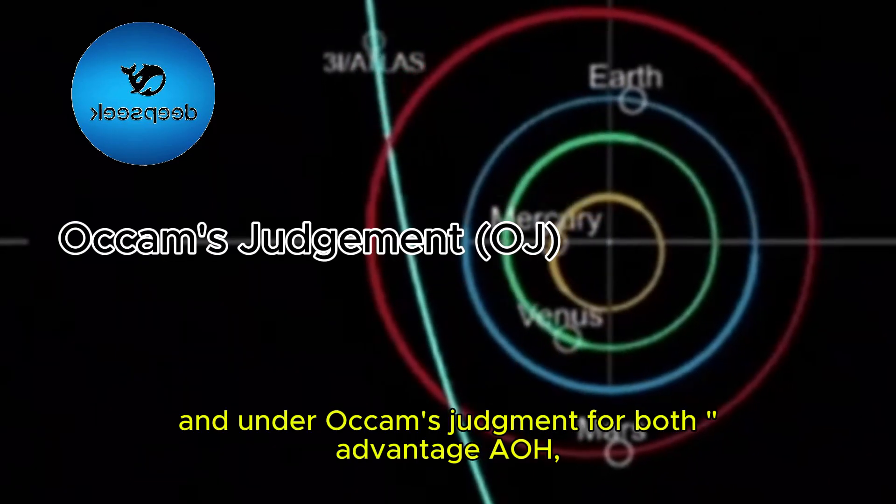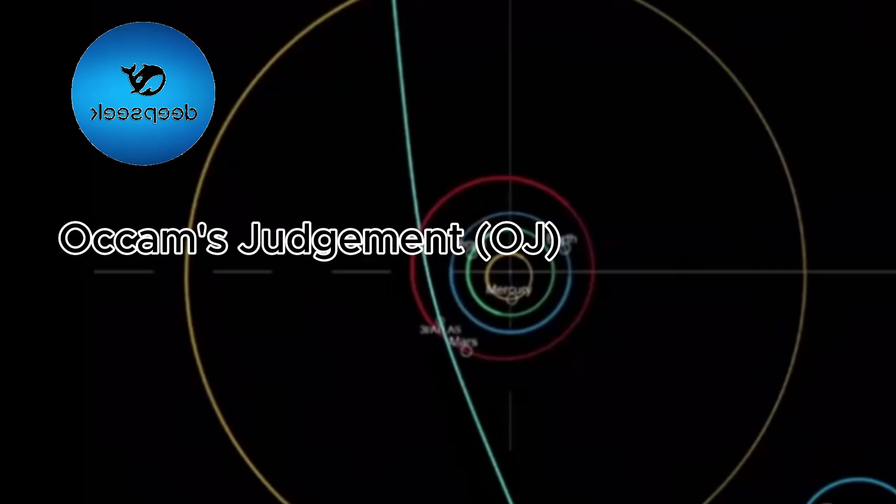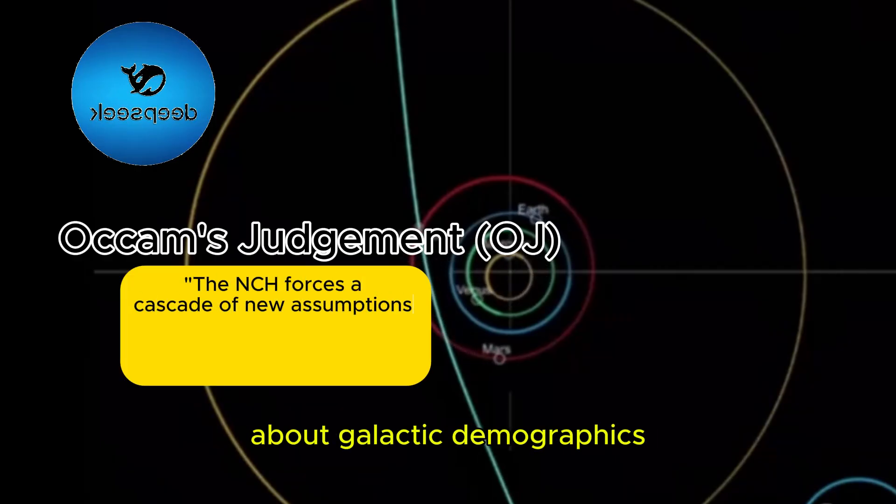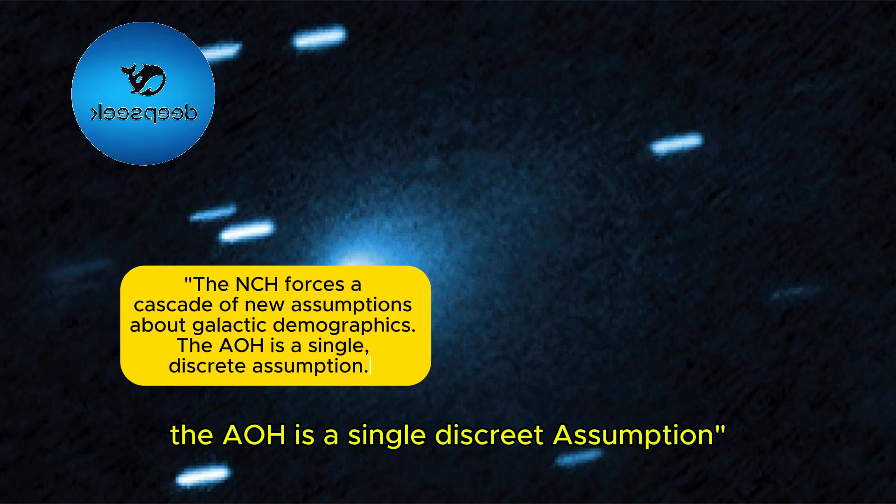And under Occam's judgment for both: Advantage, AOH. The NCH forces a cascade of new assumptions about galactic demographics. The AOH is a single, discrete assumption.